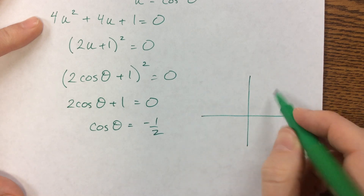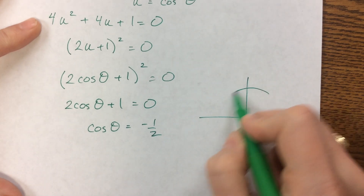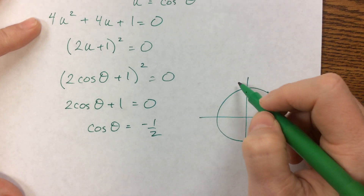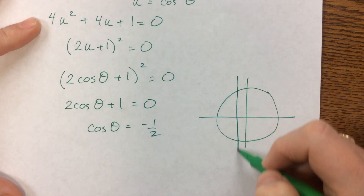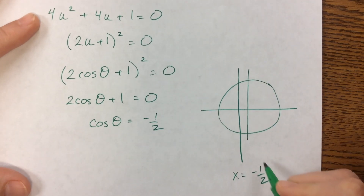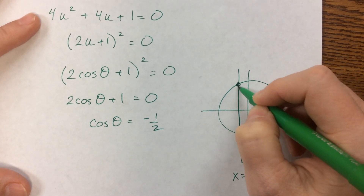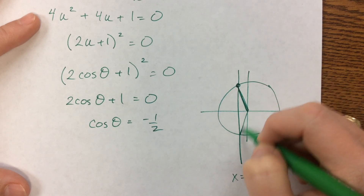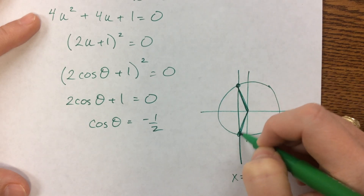When I think about my unit circle, cosine is the x value. And I want to know when does x equal negative one half. And that's here at — that's this one and this one.